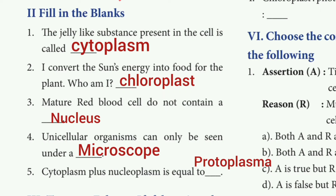Fill in the blanks. First one: the jelly-like substance present in the cell is called dash. The answer is cytoplasm. Second one: I convert the sun's energy into food for the plants, who am I? The answer is chloroplast.